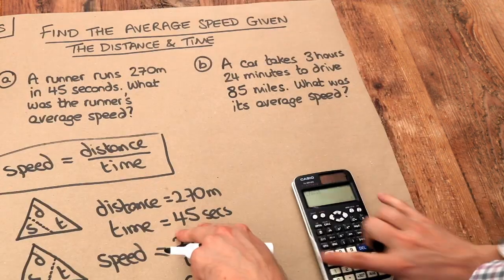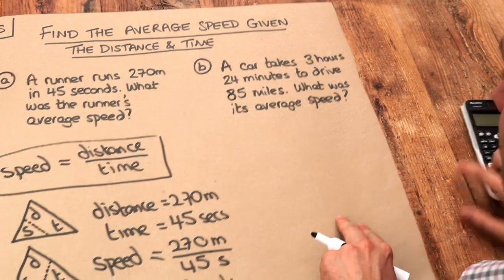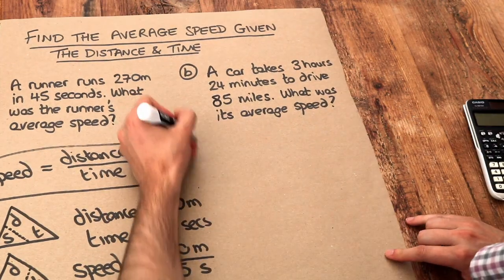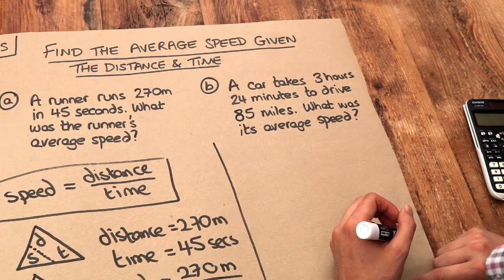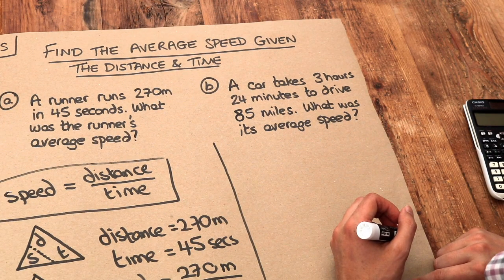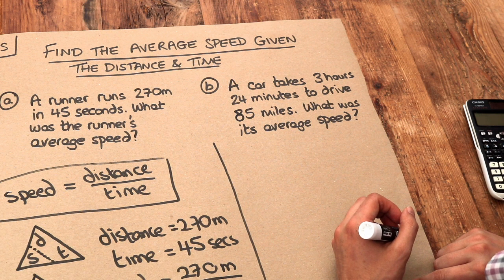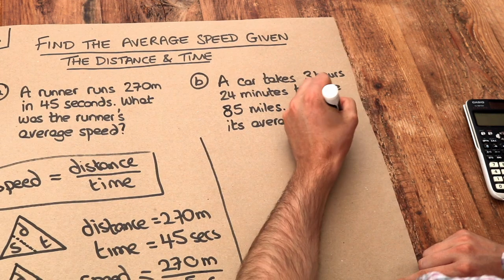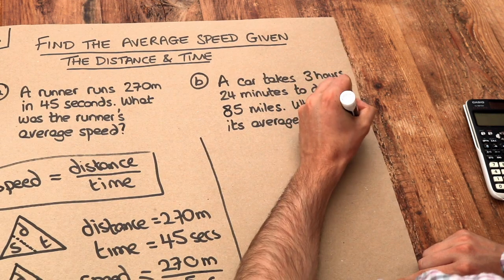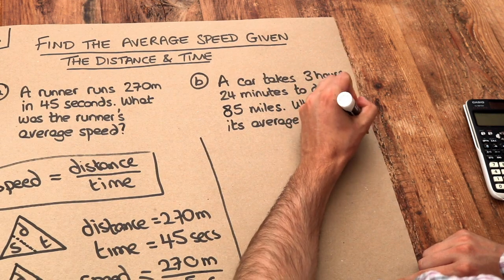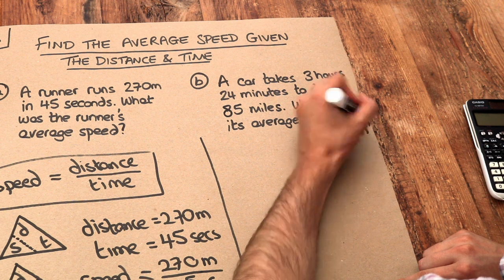What about the second problem? A car takes 3 hours 24 minutes to drive 85 miles. What was its average speed in miles per hour? MPH means miles per hour.